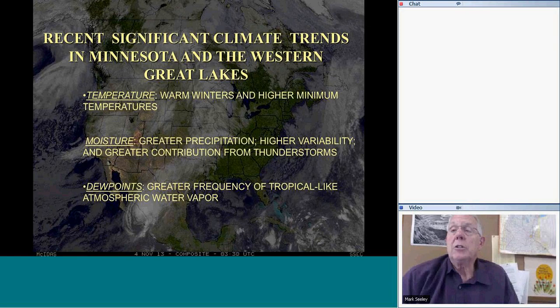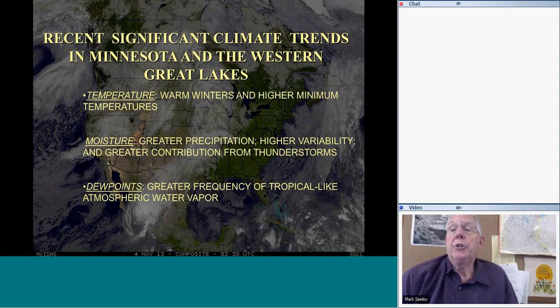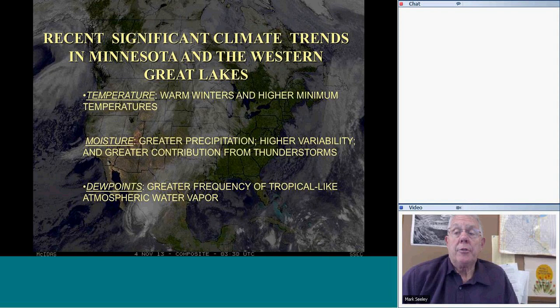The attributes we talk about the most — and I'm not the only regional climatologist that discusses these — are widespread in our region, talked about in the Dakotas, Wisconsin, and up into Canada. The future has warmed, skewed to warm winters and higher nighttime or minimum temperatures. Precipitation has increased over most of this region with higher variability, a higher disparity between wet and dry areas, and great distribution from thunderstorms. Our dew points have also increased in our lifetime — we're seeing days with higher dew points.